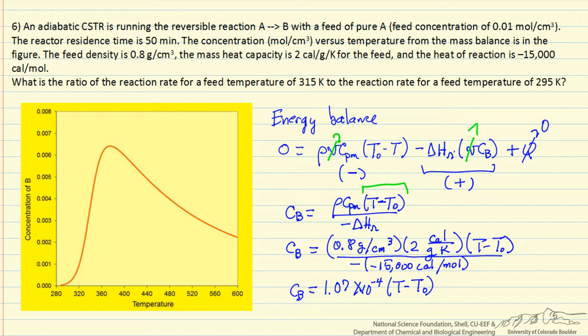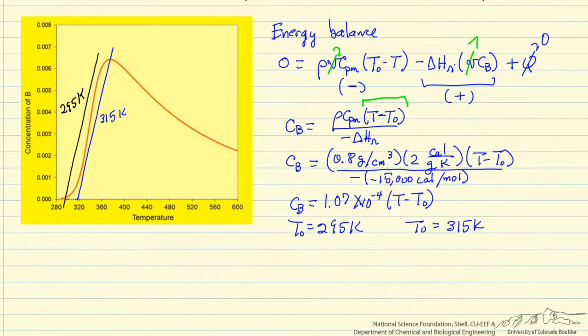So we can now plot this, and we want to plot it for two conditions. One in which the feed temperature is 295 Kelvin, so T zero is 295, and then we want to plot it for T zero is 315 Kelvin. So using the slope in this equation, I've plotted, of course these are parallel lines, the same slope, the only difference is the intercept.